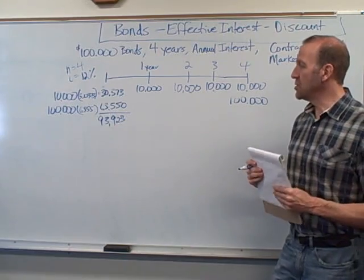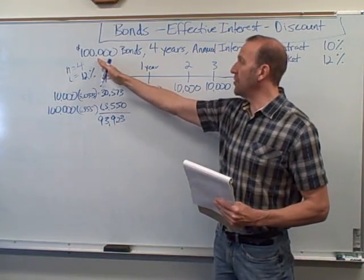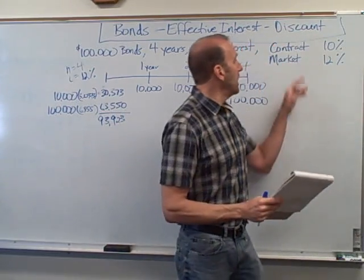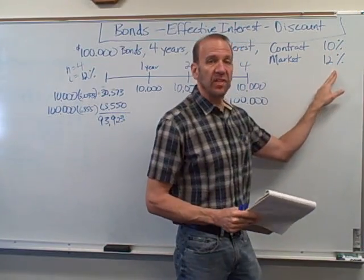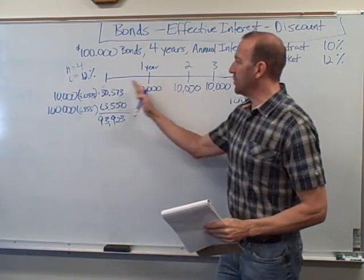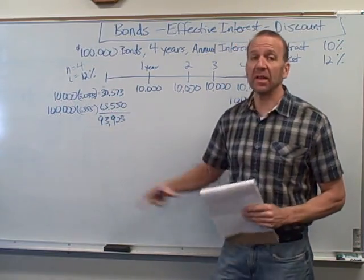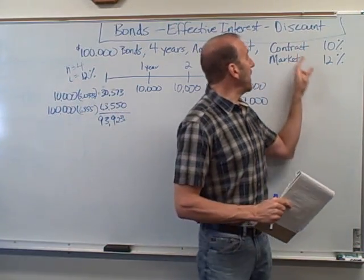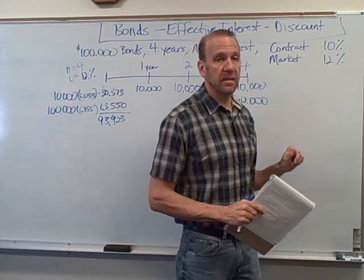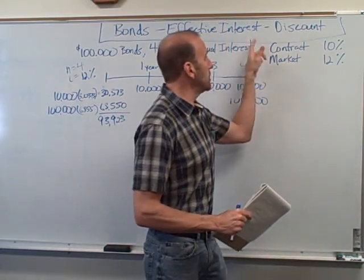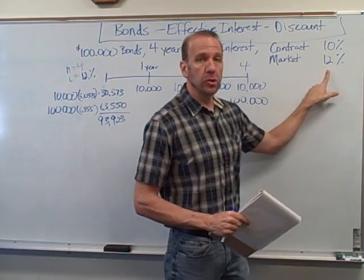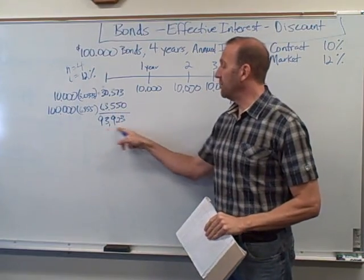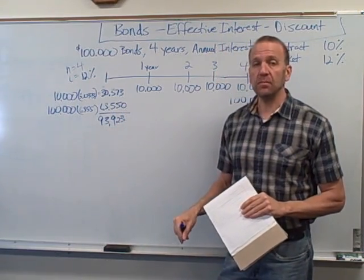The bond is selling at a discount - it's not going to sell for $100,000, it's going to sell for $93,923. If this bond had a contract rate of 10% and a market rate of 10%, discounting the flows back would add up to exactly $100,000. In my premium example in another video on the effective interest rate, when the market rate is lower than the contract rate, the bond sells at a premium and the present value calculates to more than $100,000.